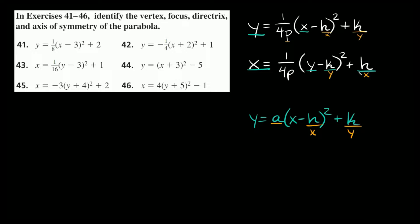Just in case you need a way to remember which one is x and which one is y: maybe you've heard of KY Jelly — KY are always paired together. So k always represents the y coordinate, and then the other one, h, represents the x coordinate.